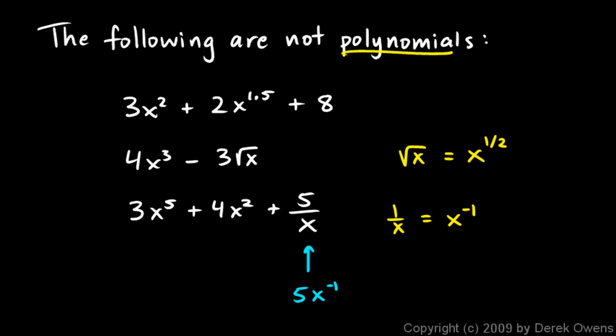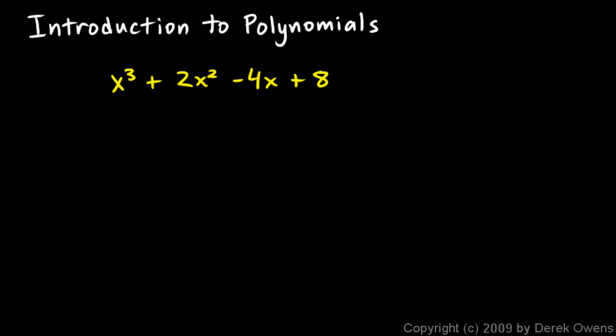Some other vocabulary you need to know: a term is the product of a number and one or more variables, or just a number by itself. So x cubed is a term, 2x squared is a term, negative 4x is a term, and 8 is a term.